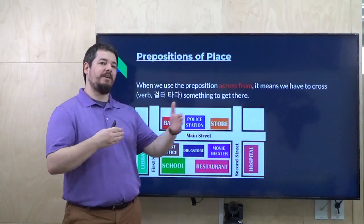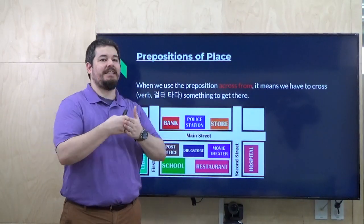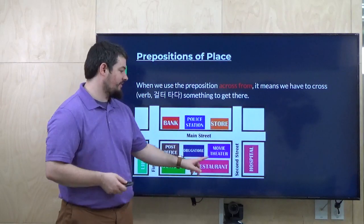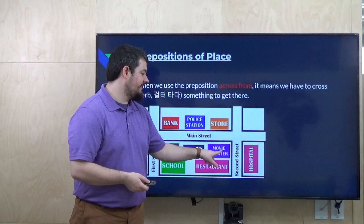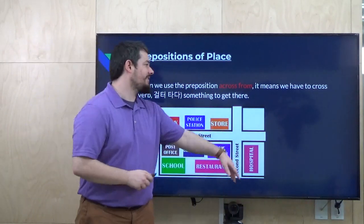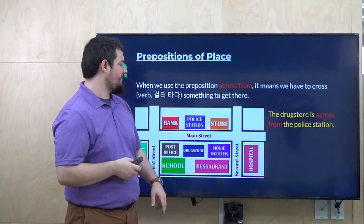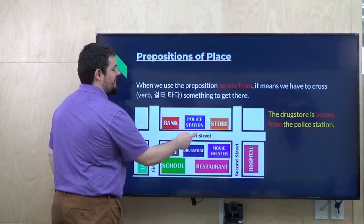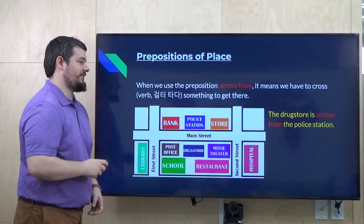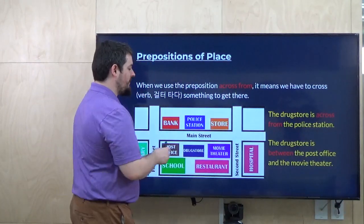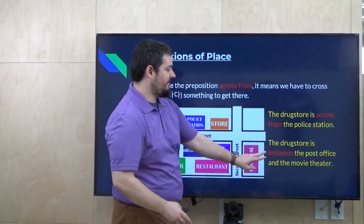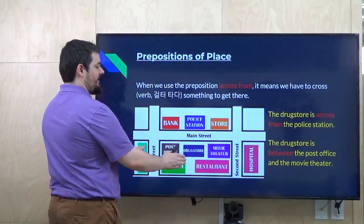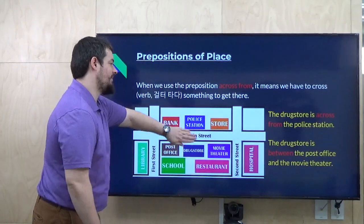When we use the preposition 'across from,' it means we have to cross something to get there — usually a street. Here we have a little map with a bank, police station, store, post office, drugstore, restaurant, school, library, and hospital. The drugstore is across from the police station — here is our street, here is the drugstore, and here is the police station. You can also say, the drugstore is between the post office and the movie theater, since we have two objects in that sentence.